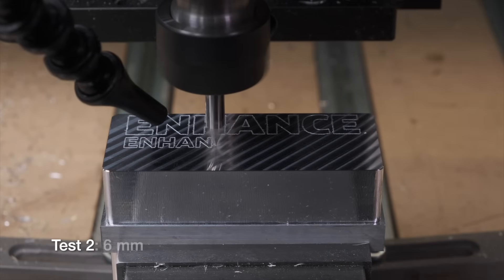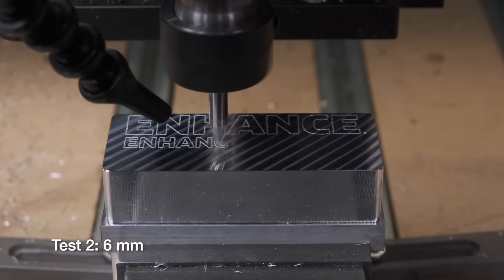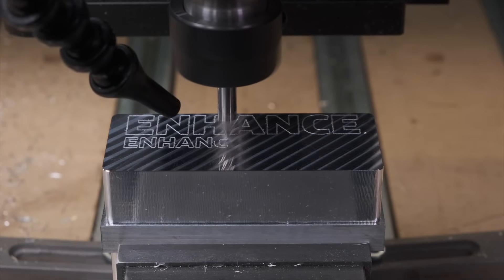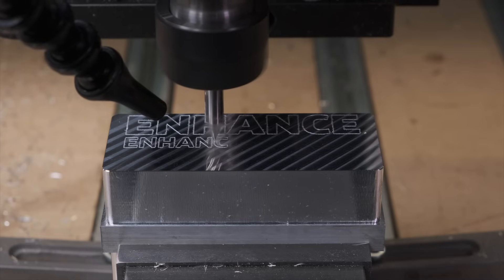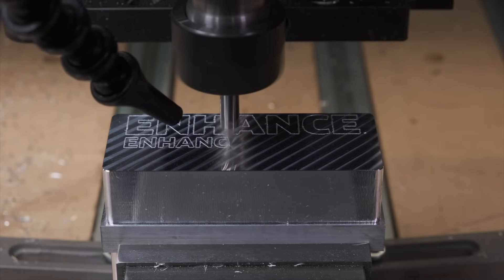This is now a six millimeter tall engraving, or roughly a quarter inch. Again, the machine is easily defining all the details in the letters needed to make them legible. Piece of cake. Let's zoom in again.